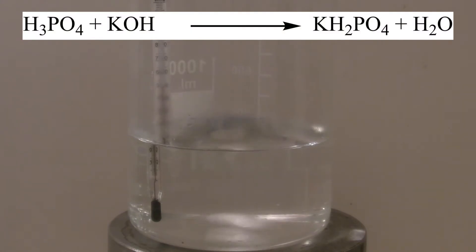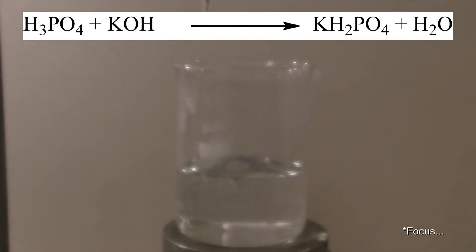Here a simple neutralization reaction takes place, where the phosphoric acid and the potassium hydroxide react to form potassium dihydrogen phosphate and water.